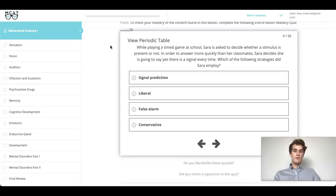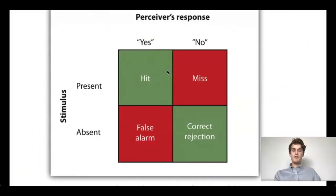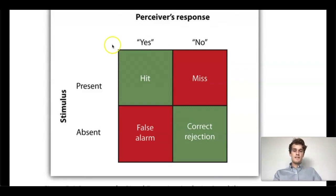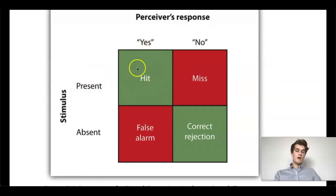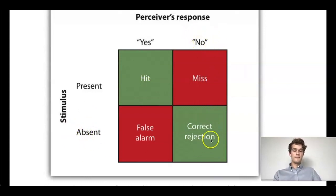So let's learn a little bit more. In signal detection theory, you're going to be presented with a stimulus and then you're going to have a response. On the Khan Academy videos they go into a lot more detail, but really all you need to know for the MCAT is this matrix right here. If you correctly perceive the stimulus and say that you perceive it, that is what we call a hit. Now if the stimulus is absent and you say that you don't perceive the stimulus, that's a correct rejection.